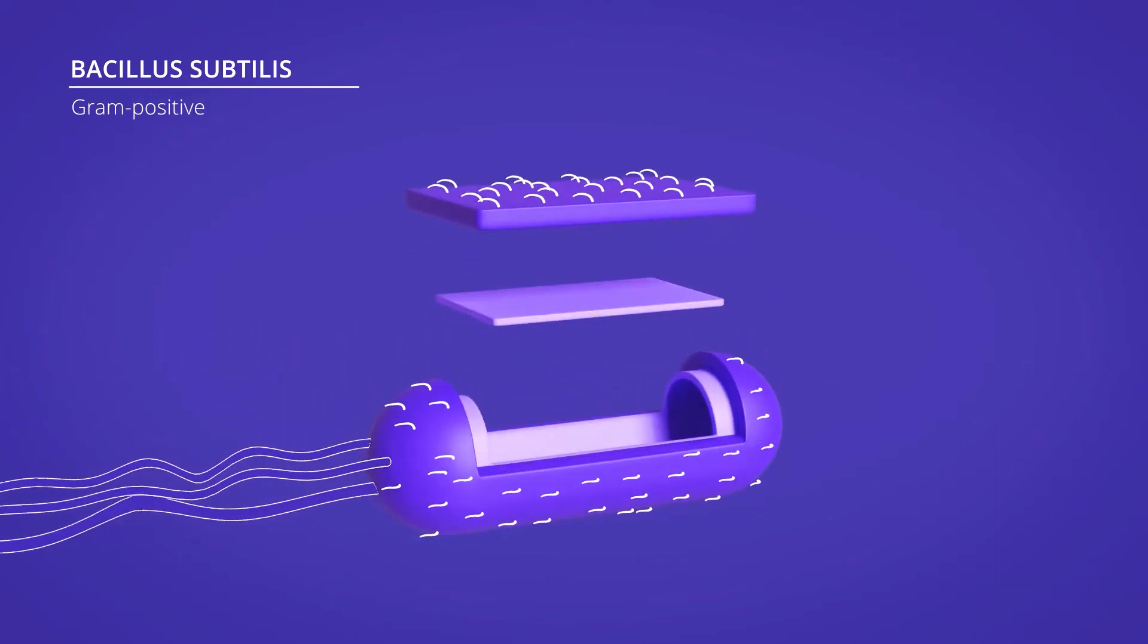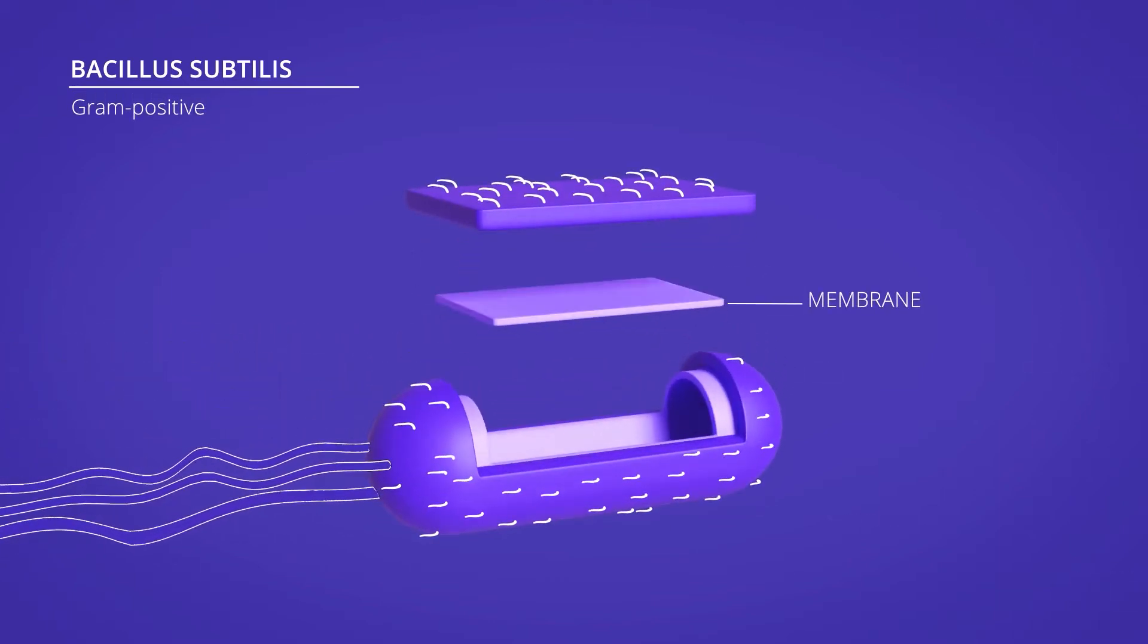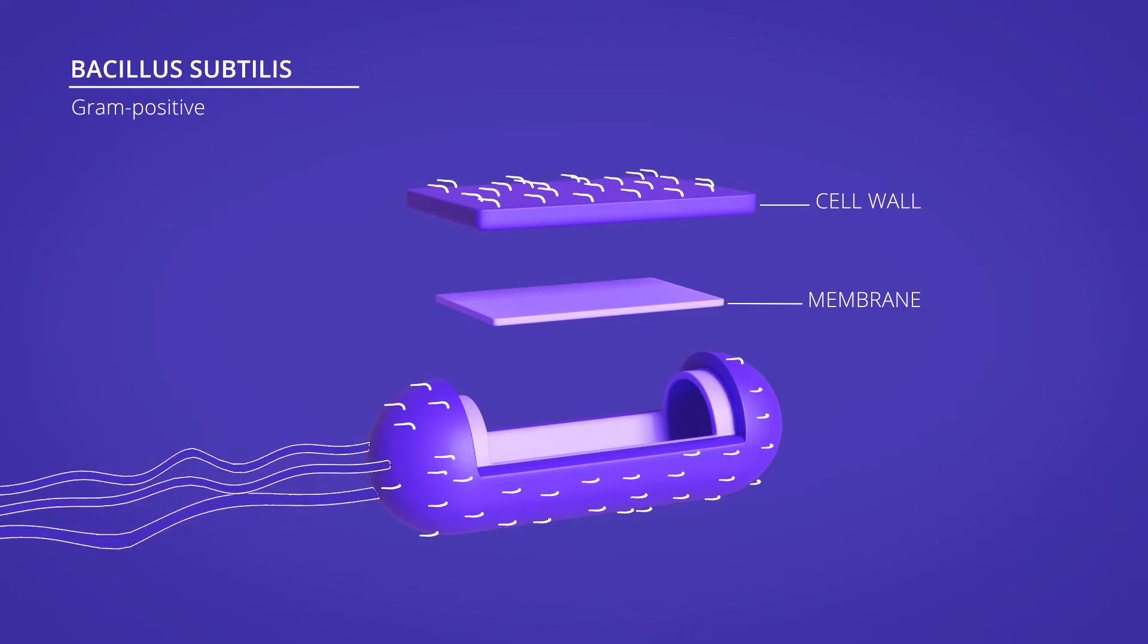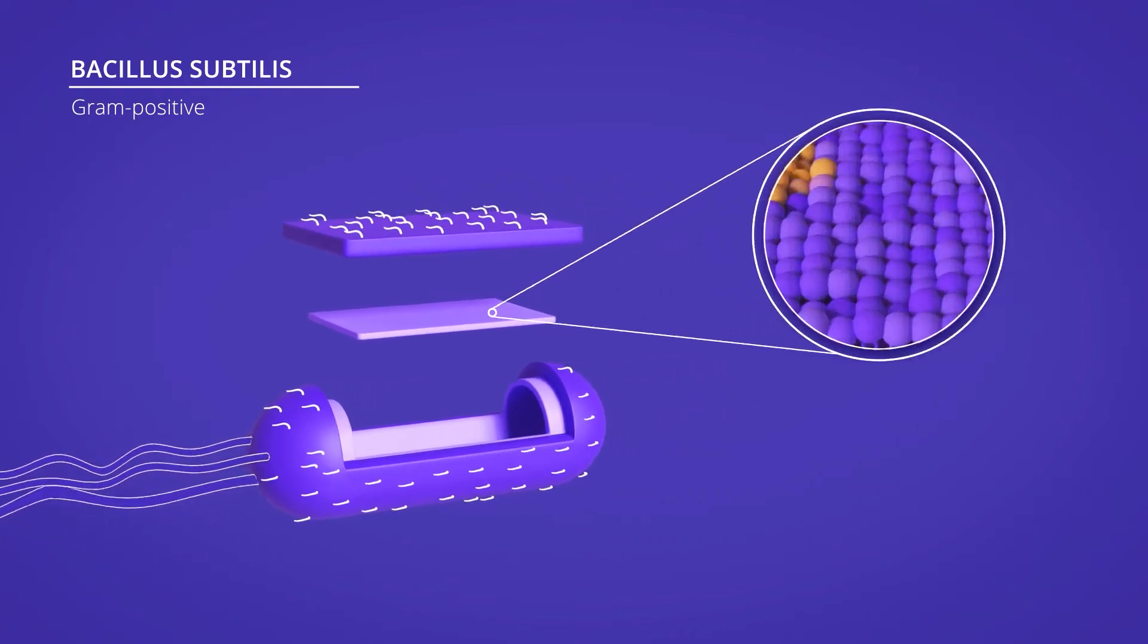It's a gram-positive bacterium which means it only has one plasma membrane surrounded by a thick cell wall and crucially, it has been found to form lipid rafts with no human intervention.